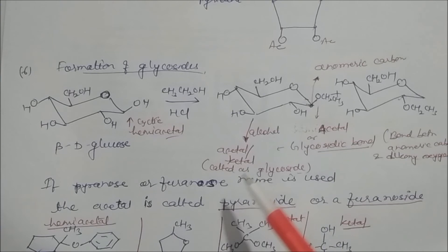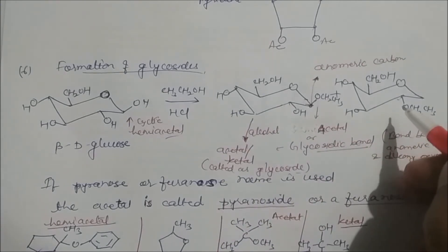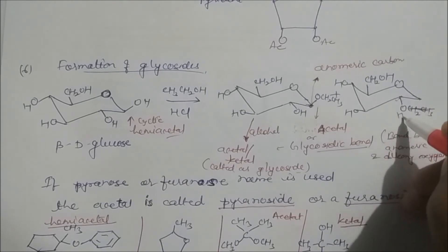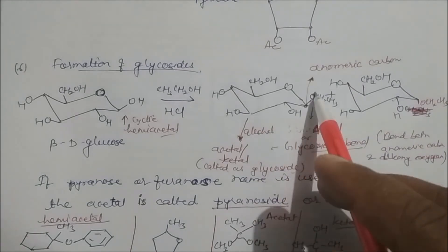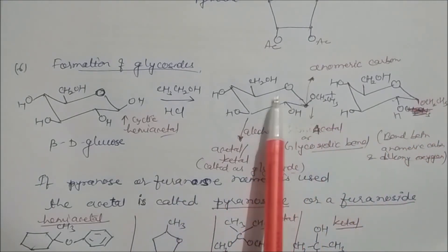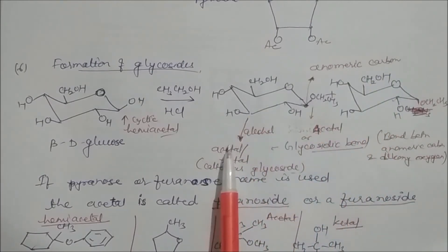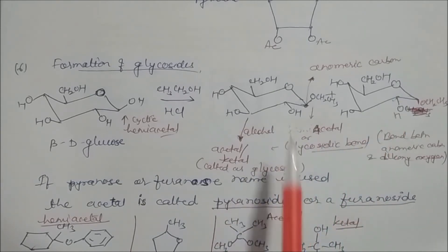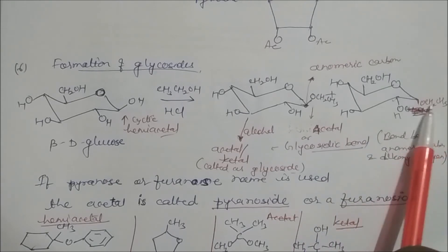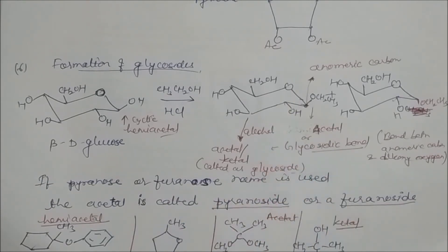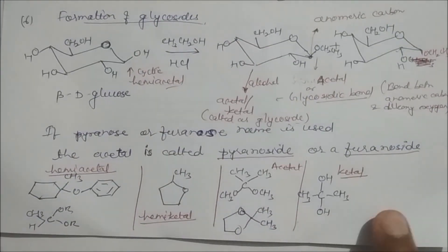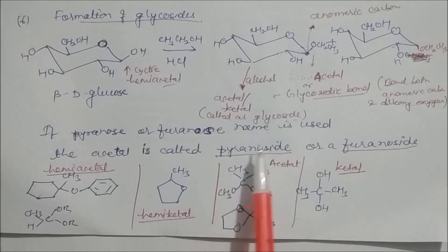The bond formed between the anomeric carbon and the alkoxy oxygen from ethanol is called a glycosidic bond. The two products are alpha and beta glycosides (acetals). If the sugar is in pyranose form (six-membered ring), the product is called a pyranoside; if in furanose form (five-membered ring), it is called a furanoside. So the acetal is also called pyranoside or furanoside depending on ring size.